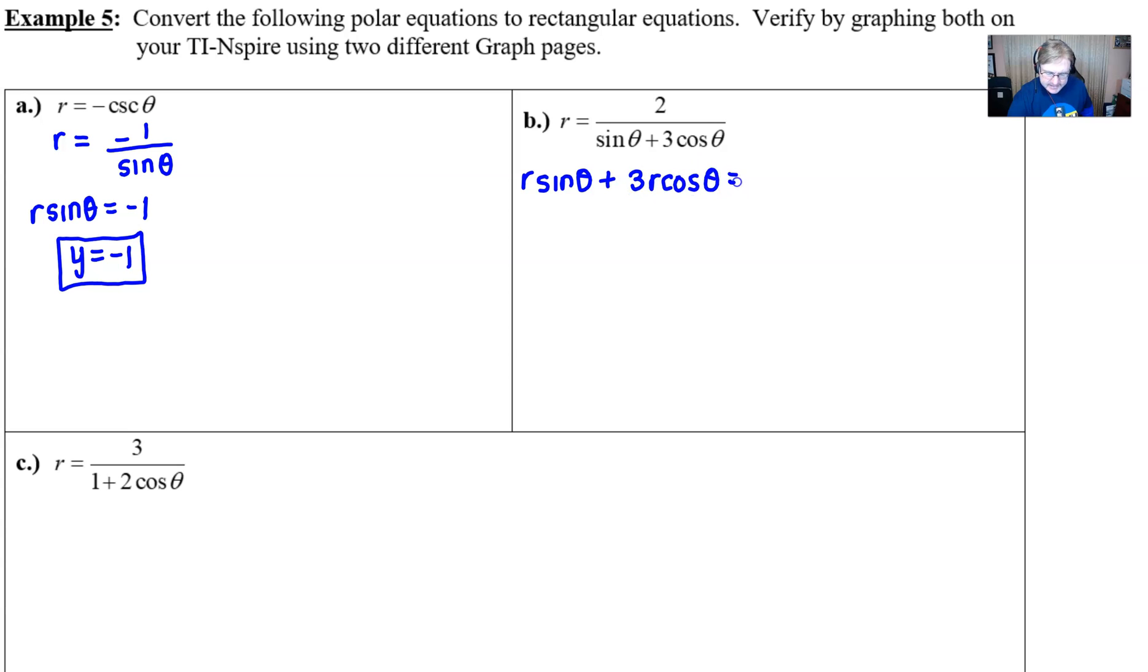So if I cross multiply, I will find myself in this position right there. At that stage, the r sine theta is the y. The r cosine is the x. Don't forget there still is a 3 in front. And this equation is perfectly suitable to be left like that. If you want to get y all by itself, that's certainly allowed as well. And it looks like we have a line with a slope of negative 3 and a y-intercept of positive 2 here.